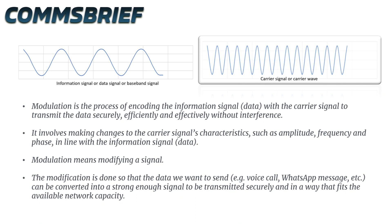First, let's refresh the memory a little bit. Modulation is the process of encoding the information signal data with the carrier signal to transmit the data securely, efficiently, and effectively without interference. It involves making changes to the carrier signal's characteristics such as amplitude, frequency, and phase in line with the information signal or data. So modulation basically means modifying a signal so that the data we want to send — for example, your voice call or WhatsApp message — can be converted into a strong enough signal to be transmitted securely and in a way that fits the available network capacity.